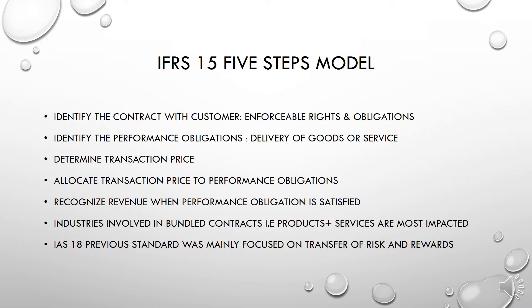The new standard has introduced a five-step model. The first step is the identification of the contract of the company with the customer. A contract is an agreement that clearly outlines enforceable rights both for the company and the customer, and specifies the rights and obligations of both parties involved in the agreement. The second step is to identify the performance obligations involved in the contract — for example, what goods have to be delivered or services have to be provided by the company.